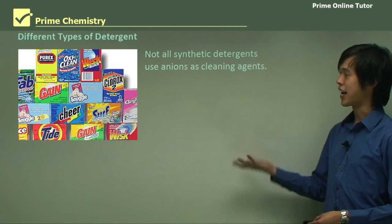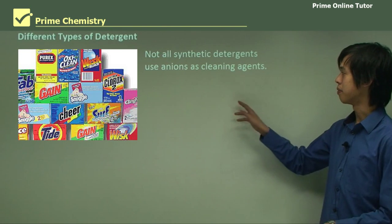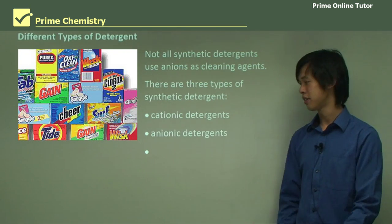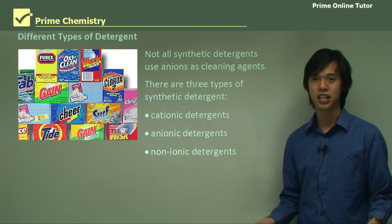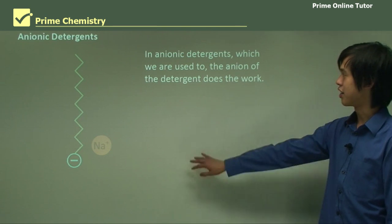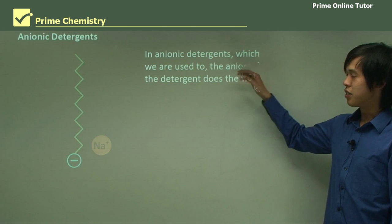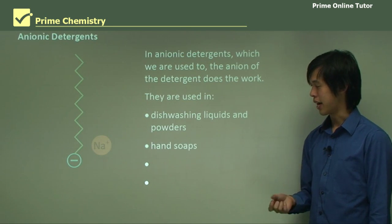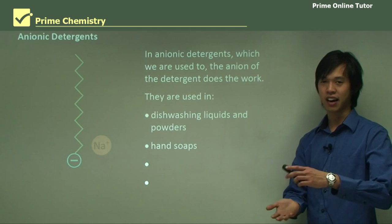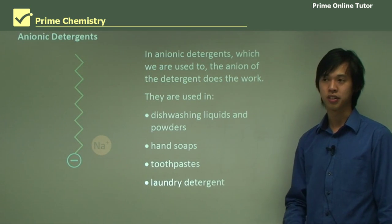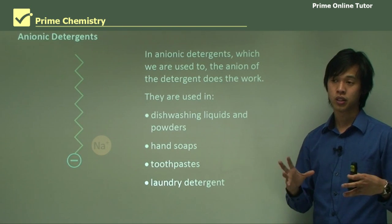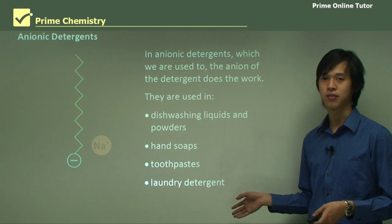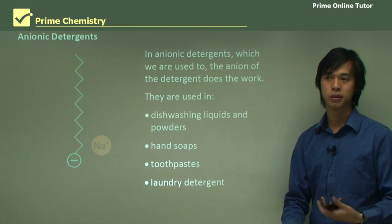Not all synthetic detergents are anionic — there are three types: cationic, which implies a positive head; anionic; and non-ionic detergents. Anionic detergents are the type we're used to — the anion does the work. They're used in dishwashing liquids and powders, hand soaps, toothpaste, and laundry detergent. They work really well for cleaning things that absorb a lot of water, particularly cotton. They're also quite sudsing, so they produce a lot of bubbles and foam.